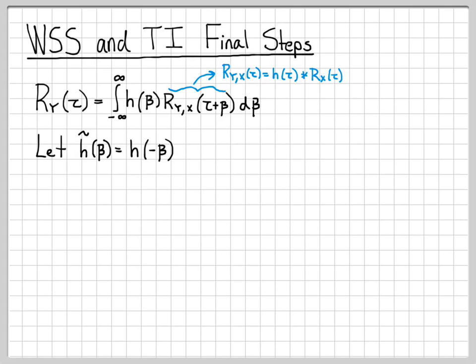What we're going to do is introduce what we call h-tilde of beta. This is simply a time-reversed version of the impulse response, so h-tilde is h of negative beta. There's not a great reason to define this except for the fact that it's going to simplify the mathematics here, resulting in a really nice final expression. There's nothing especially significant about this function in particular, except that it helps us with the math.